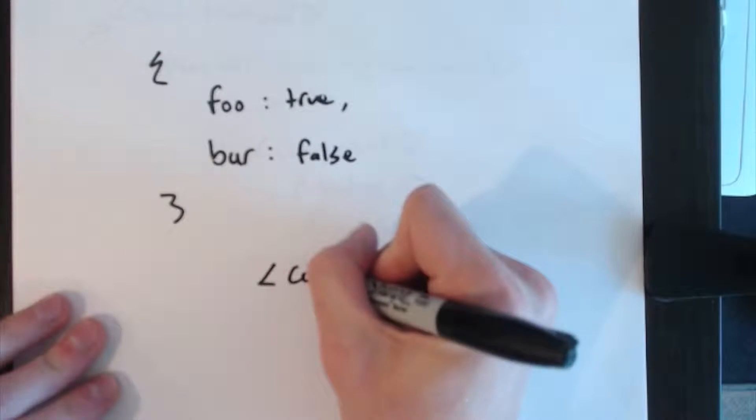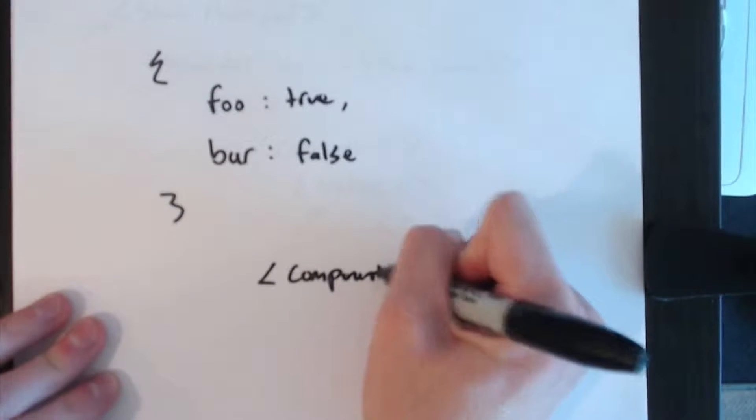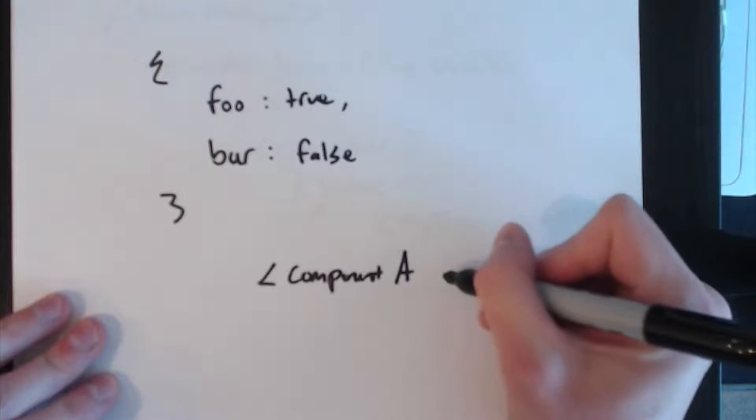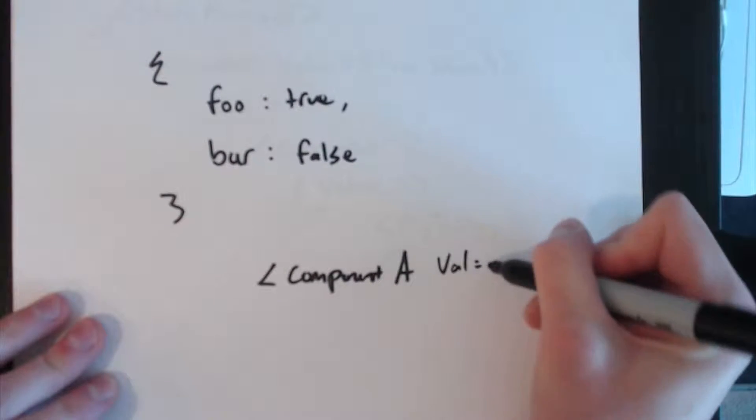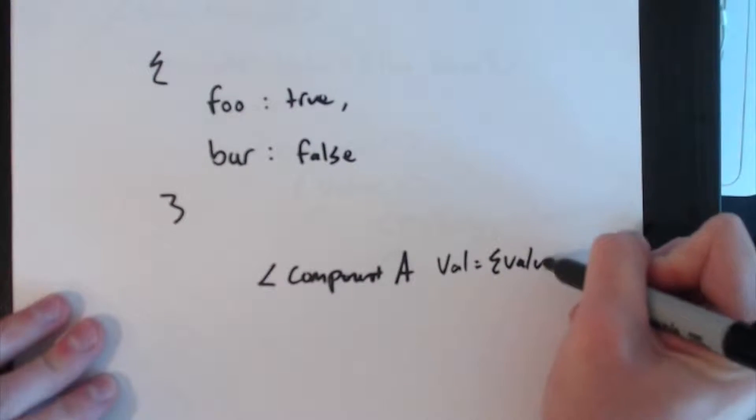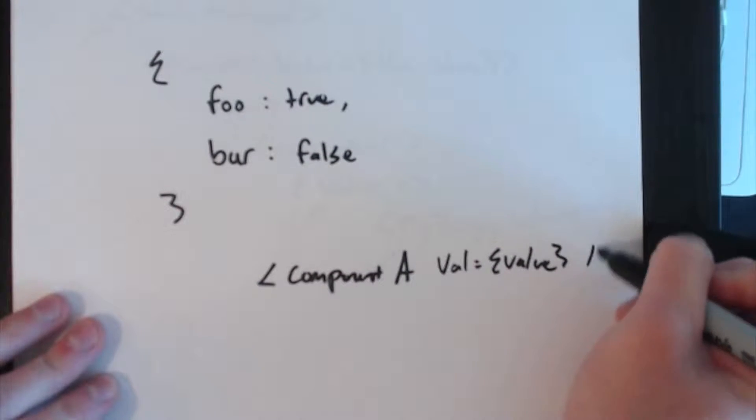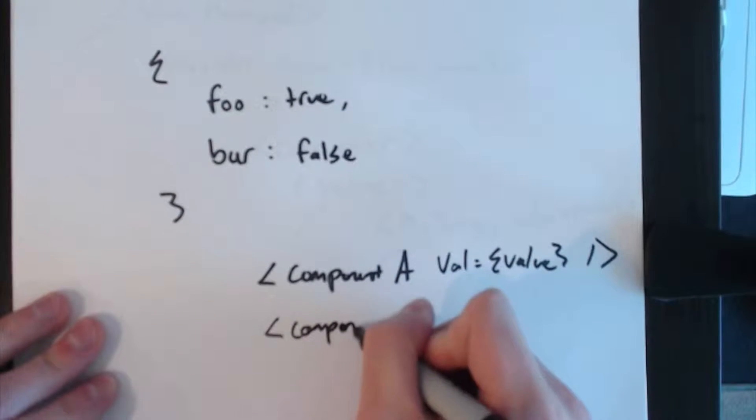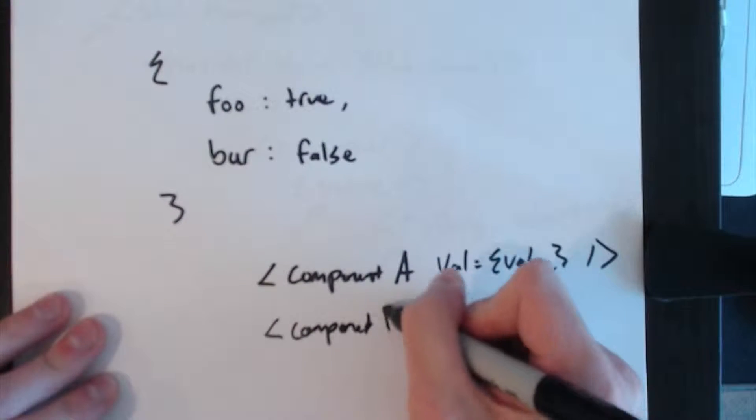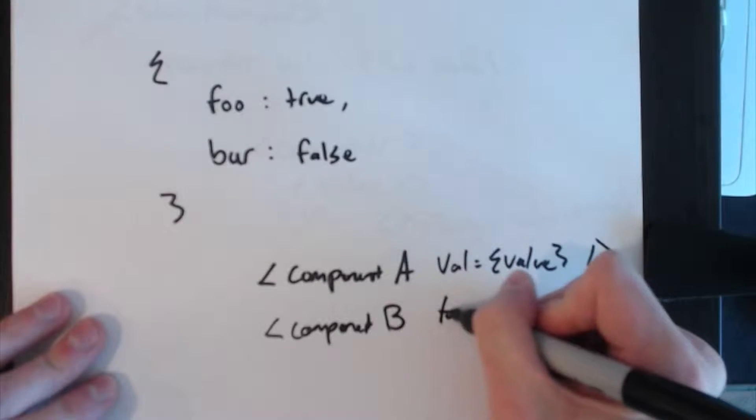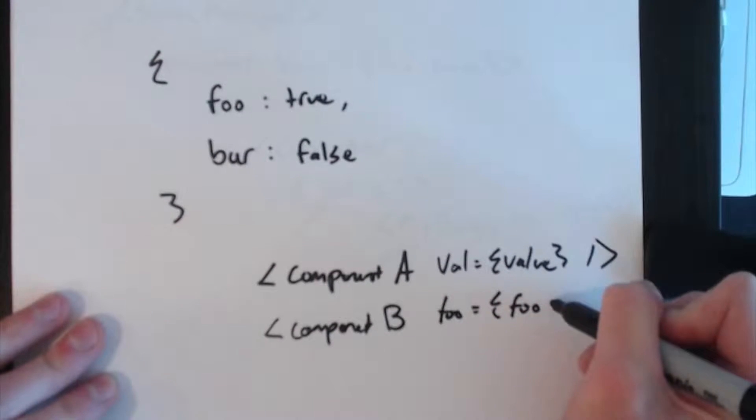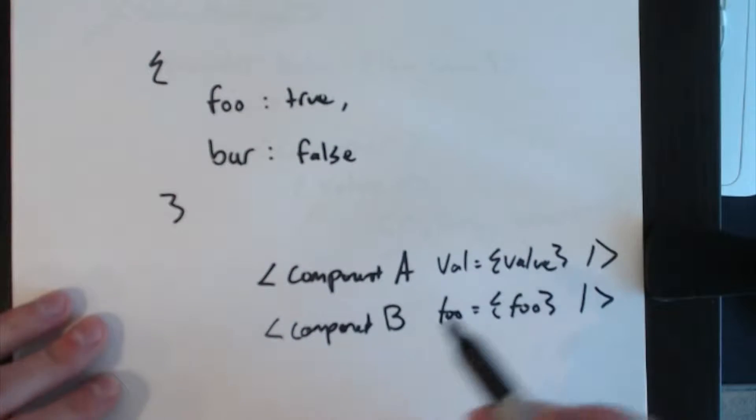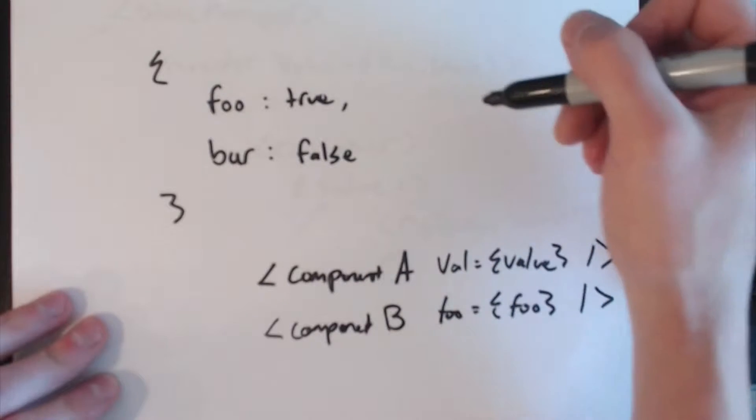So it's an object with two boolean properties. Let's say further down the tree you have two components—component A and B. Component A takes in a prop called val which is the whole value from the consumer, and then component B takes in a prop called foo and we have access to the foo property from the value, so that was received from value.foo.